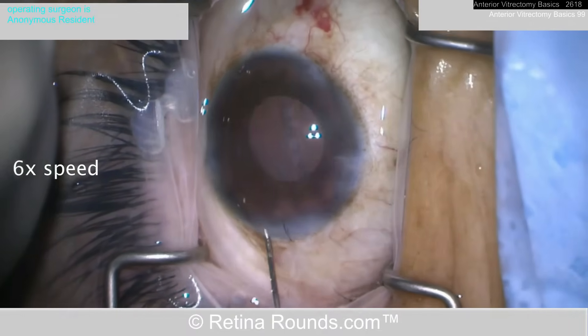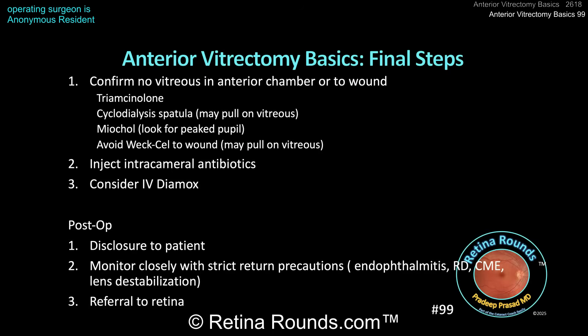Triamcinolone is used to confirm there's no vitreous in the AC — it looks nice and clean. To recap the final steps: confirm no vitreous in the anterior chamber or wounds using triamcinolone. You can also use a cyclodialysis spatula to sweep near the paracentesis or corneal wounds, though be cautious as this may pull on vitreous and increase traction on the retina. Miochol is a good idea to constrict the pupil, stabilize the sulcus lens, and help identify a peaked pupil that would indicate residual vitreous. Avoid using a Weck-Cel to test the wound as it could cause excessive retinal traction.